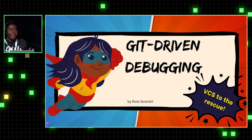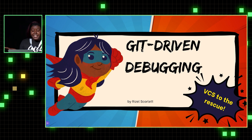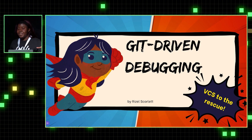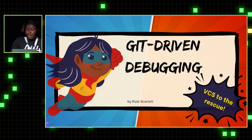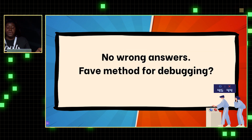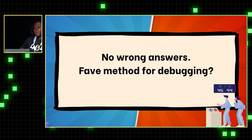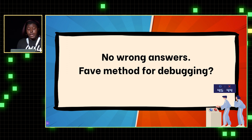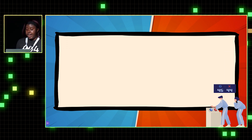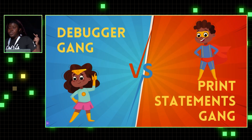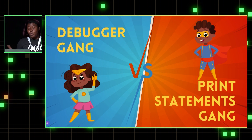Hello, everybody. Today we are going to talk about Git-driven debugging and I'm going to ask for a little bit of audience interaction because that makes me feel more relaxed. So I have a question for you all — you don't have to yell it out. What is your favorite method for debugging? I'm going to give you two choices: do you prefer using the debugger or do you prefer using print statements?